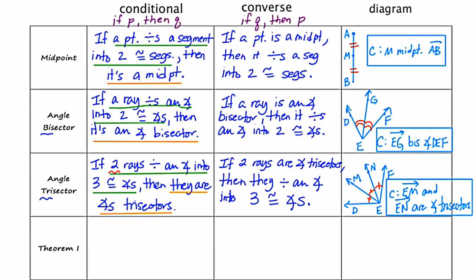Our last conditional is going to be the very first theorem we learn. A theorem is a mathematical statement that can be proved true — please write that down. Our very first theorem is: if two angles are right angles, then they are congruent. I'll identify the hypothesis and the conclusion.